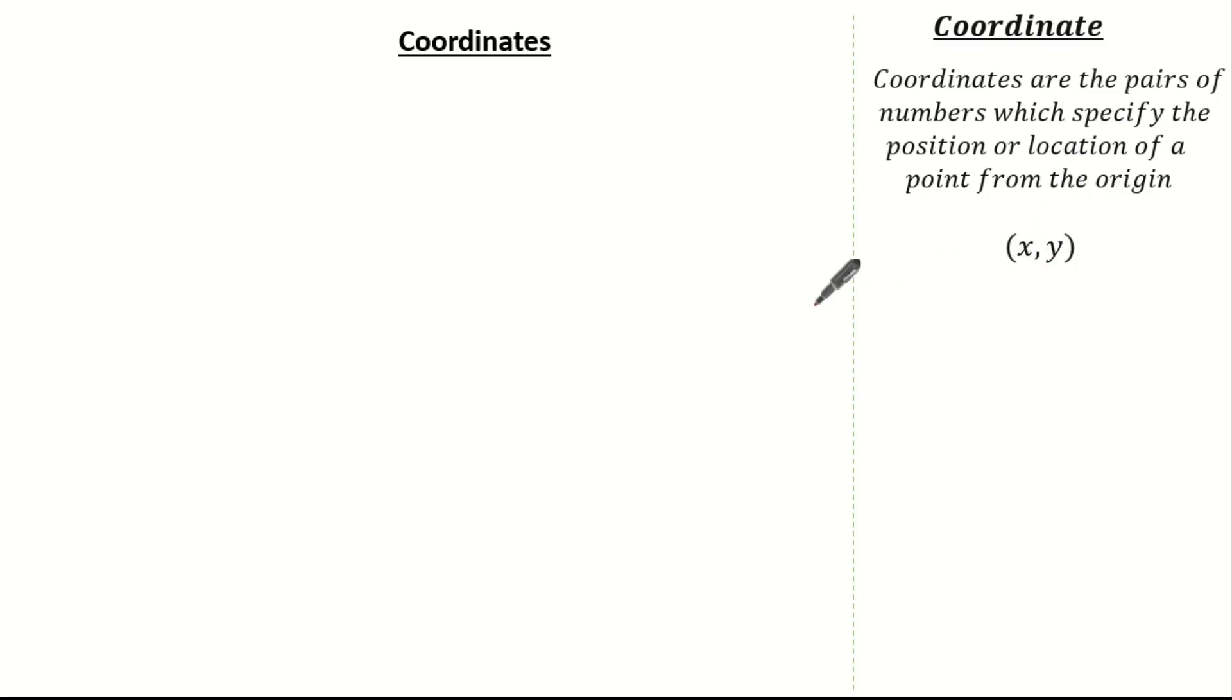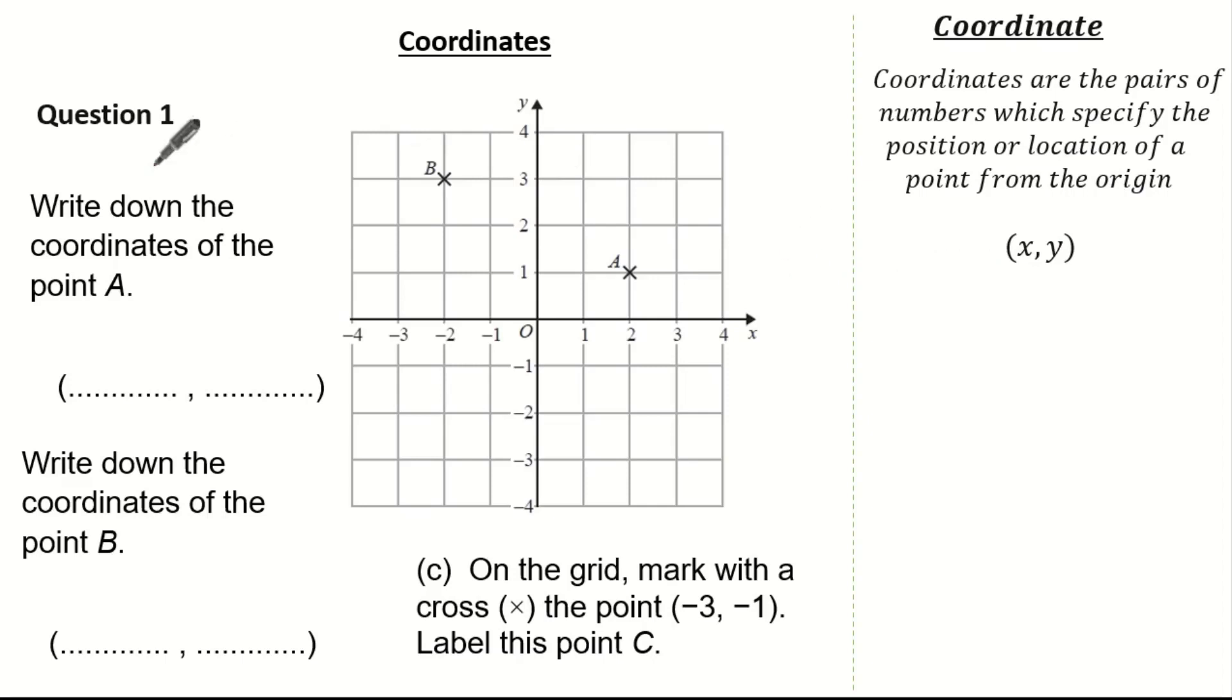So let's jump to some exam questions. Here the question wants us to write down the coordinates of a and write down the coordinates of b and plot on the grid a particular coordinate. So let's have a look at coordinate a first.